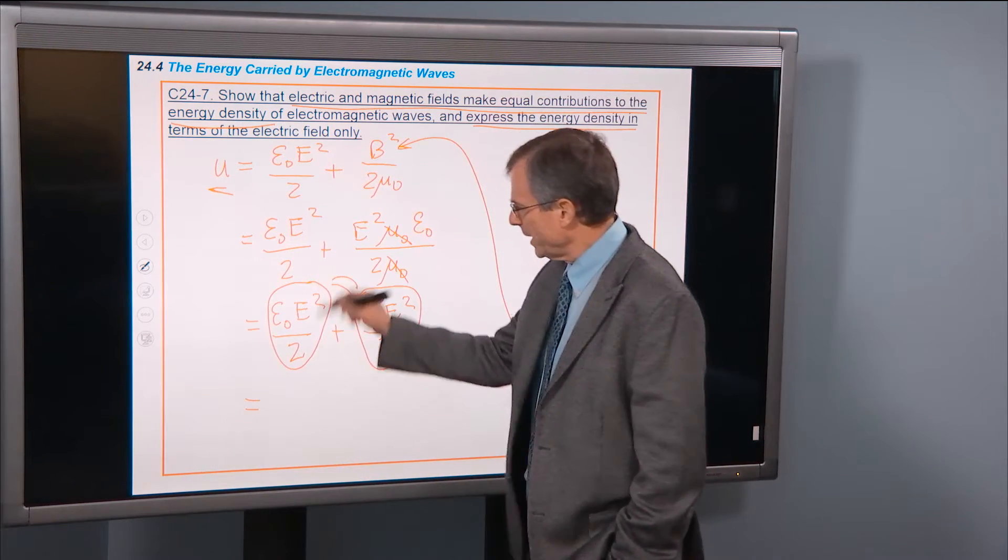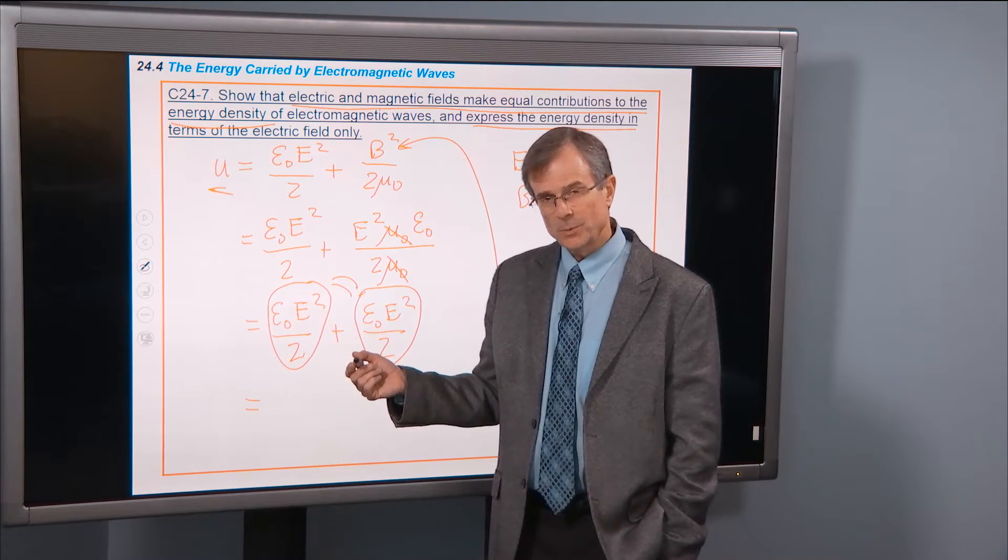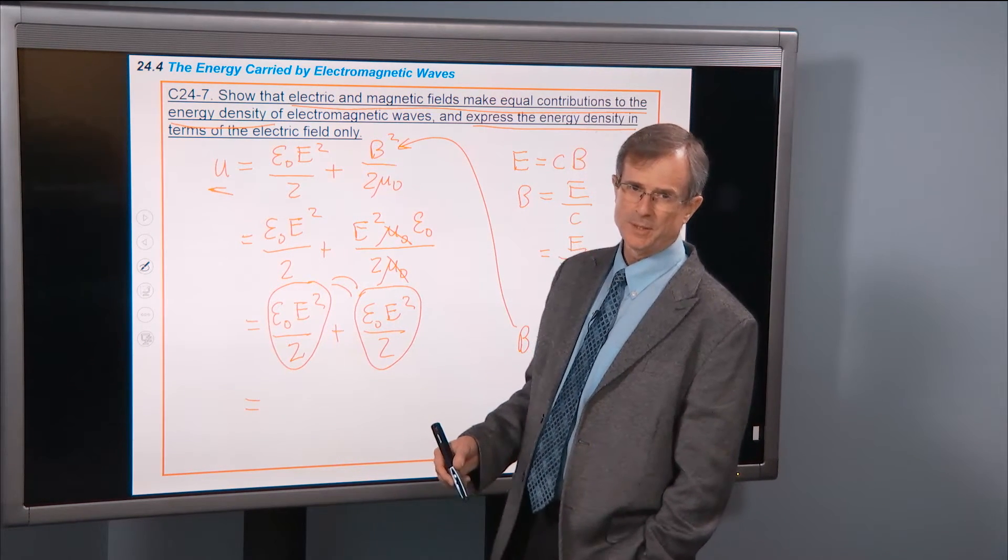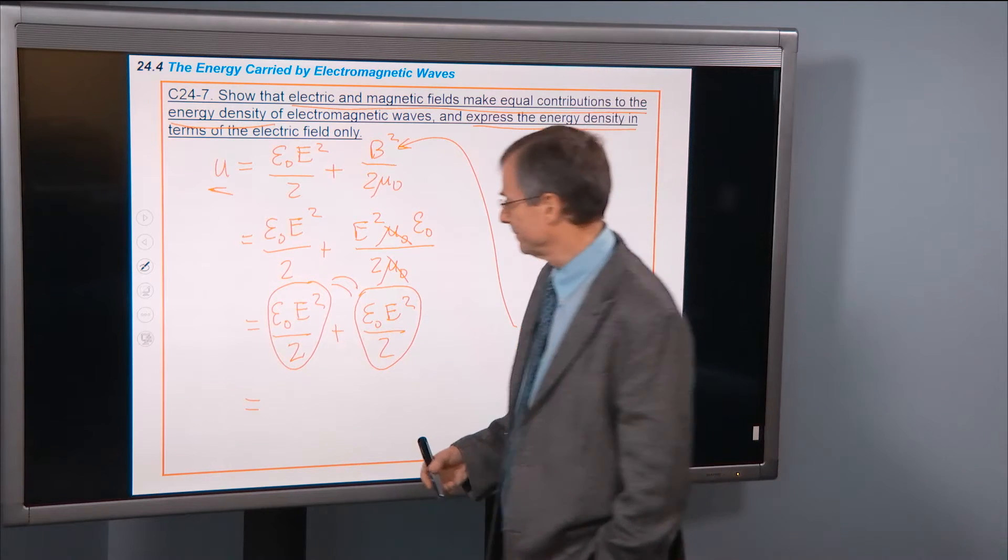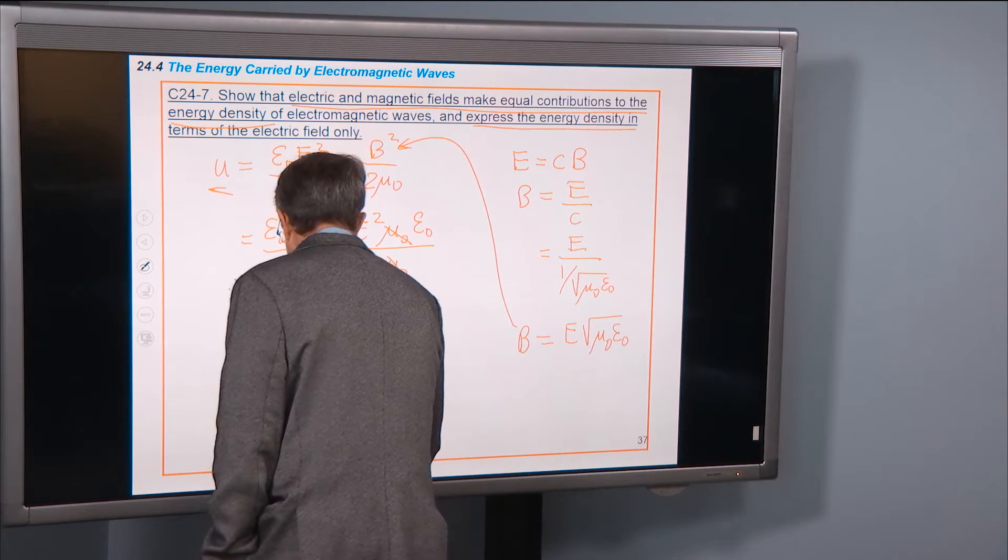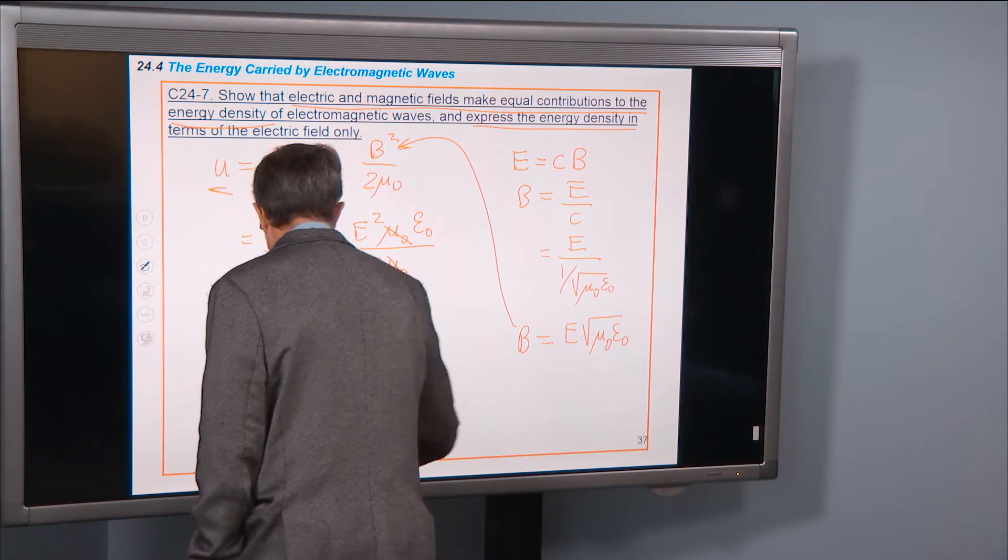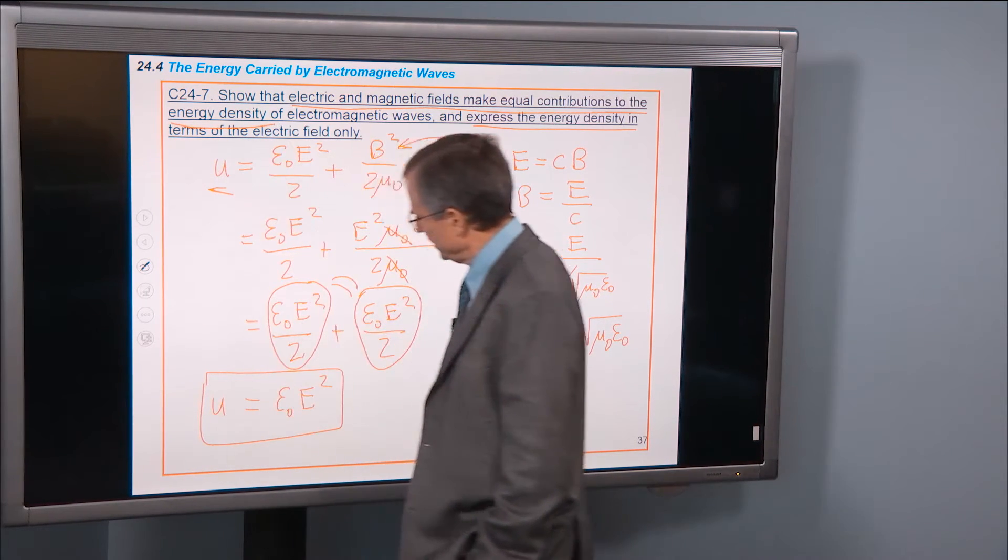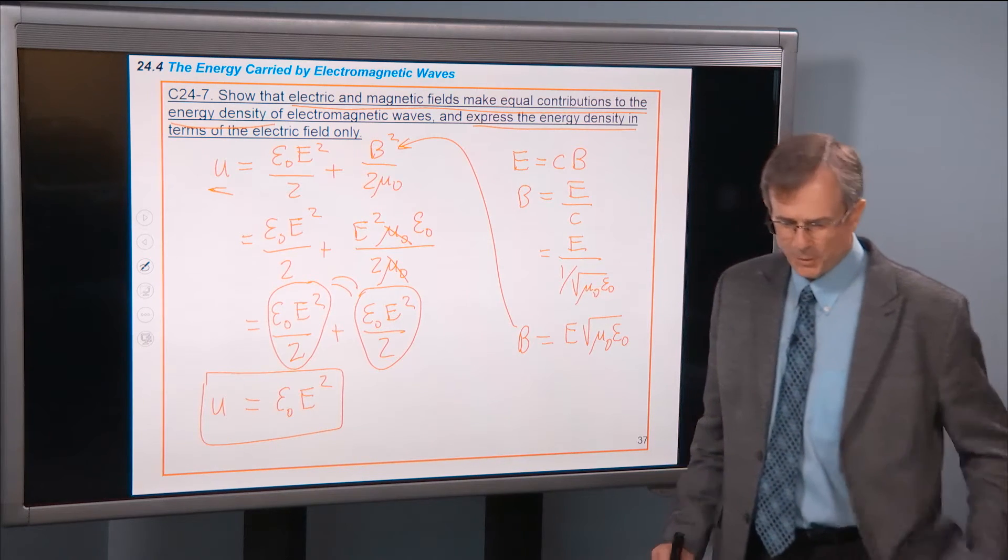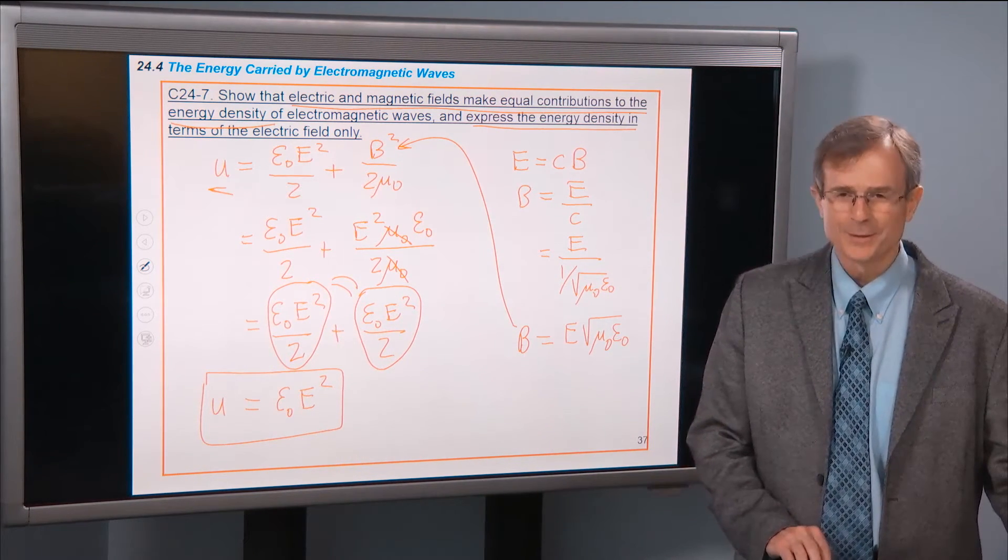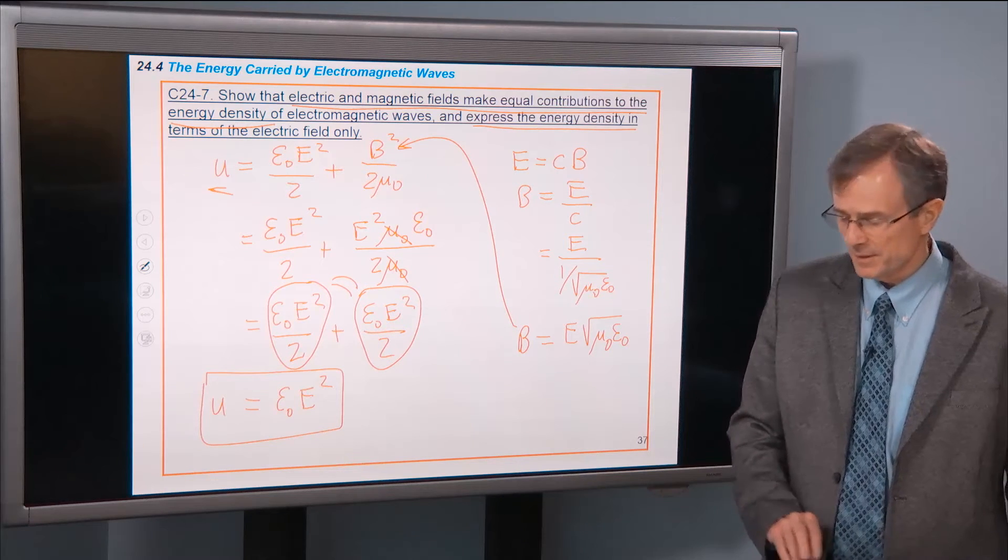We're also asked to express the energy density in terms of the electric field only. Well, I've got 1 half ε0e squared plus 1 half ε0e squared, and that gives us ε0e squared. So can you all do that? You sure can.